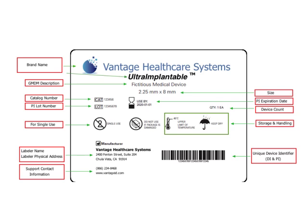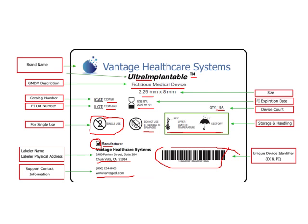Here is an example of a label. It has a brand name, a trademark, a GMDN description — a global nomenclature system — and sizing. There's a catalog number, a lot number, a use-by date, and a 'single use — do not use twice' symbol. There's a 'do not use if package is damaged' warning, a factory symbol indicating the manufacturer, with name, address, zip code, phone number, and website, plus storage and handling guidelines. There's also a Unique Device Identifier, which I'll discuss next.